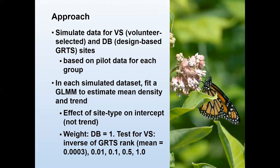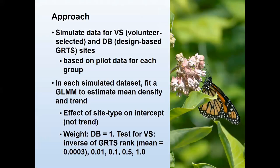After simulating the data, I fit a generalized linear mixed model to estimate the mean density and the trend. This is also a weighted regression where we can apply different weights to the volunteer-selected sites. I tried a few different levels of weight: first looking at the inverse of the GRTS rank, which works out to a mean of 0.0003 — a very small weight — and then trying some other weights including a weight of 1 so we can see what happens if we don't down-weight.